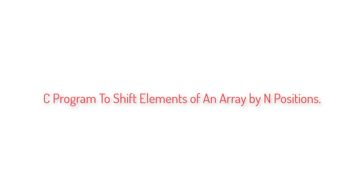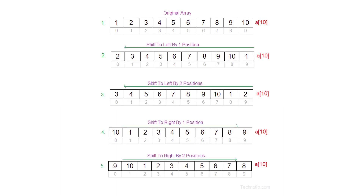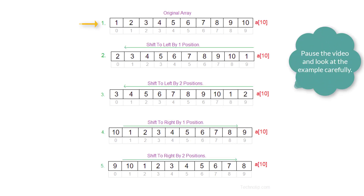Let's write a C program to shift elements of an array by n positions, covering both left shift and right shift. Here's an example with the original array: if you shift it to left by one position, this is the resultant array. If you shift to left by two positions, then this is the resultant array.